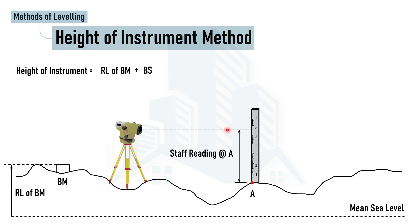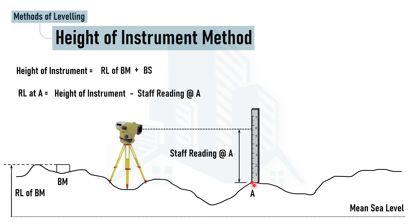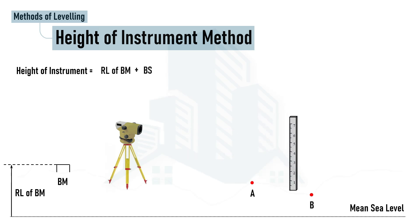The reduced level at point A is calculated by subtracting the staff reading from the height of instrument, since we know the reduced level of the instrument axis and we are moving downward to the ground point. So: Reduced Level at A = Height of Instrument − Staff Reading at A.